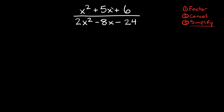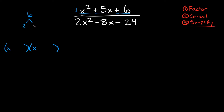I'm going to start by factoring the top. The top has a leading coefficient of just 1, so we can factor this by splitting it into two sets of parentheses. x squared becomes x times x. To figure out the numbers, look at the last number — positive 6. What two numbers multiply to get 6 and also add up to positive 5? That would be positive 2 and positive 3: 2 times 3 equals 6 and 2 plus 3 equals 5. So we plug in positive 2 and positive 3.